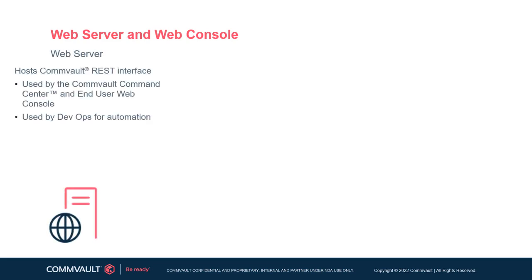The Commvault web server hosts the Commvault REST API interface to communicate with the CommServe system. This allows access to CommCell and end-user operations through the Commvault Command Center, web console, and third-party REST API agents.